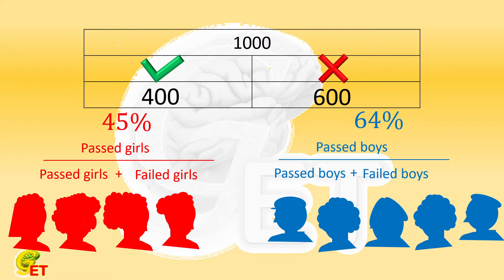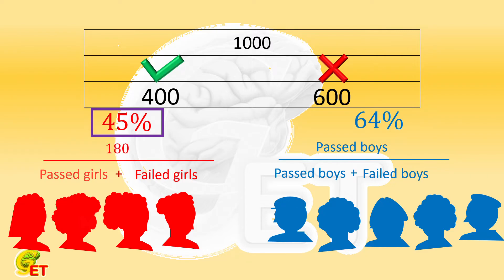Out of the 400 children who passed the test, 45% were girls. So passed girls equals 400 times 45%, which equals 180. Then passed boys is 400 minus 180, which equals 220.